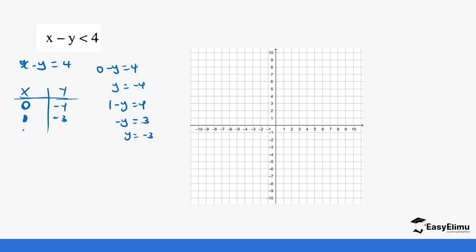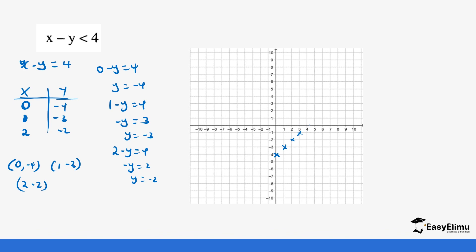If x equals 2, then 2 minus y equals 4, so minus y equals 2, meaning y equals negative 2. We now have three points: (0, -4), (1, -3), and (2, -2). You can get as many points as you want. Plotting these on the graph: (0, -4) is here, (1, -3) is here, and (2, -2) here. Notice the line goes in this direction. Before joining, remember the inequality is less than 4 with no equal sign, so the line should not be bolded — it must be dotted.